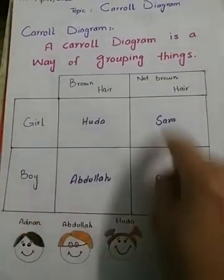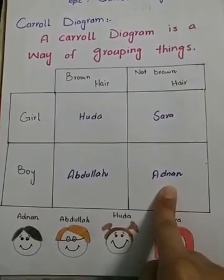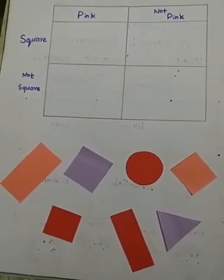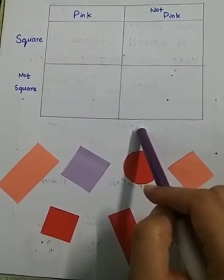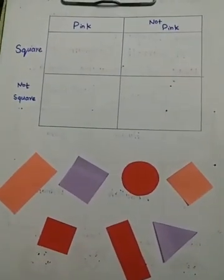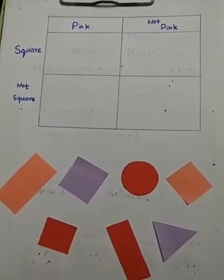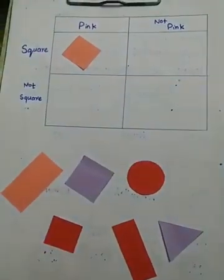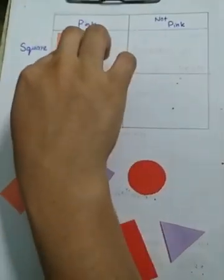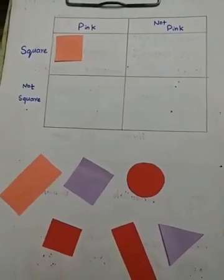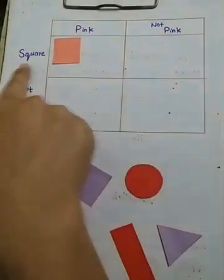Let's go to another example. We have a Carroll diagram here. We have to put a square of pink color here, and a square of not pink color here. In this diagram we find a square of pink color — here it is. We'll put this here in this block: a square of pink color.